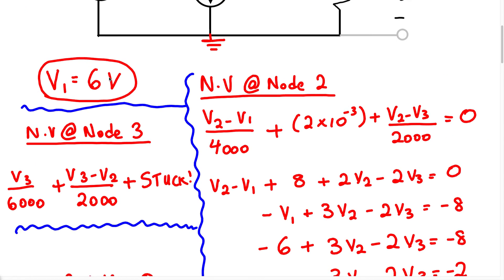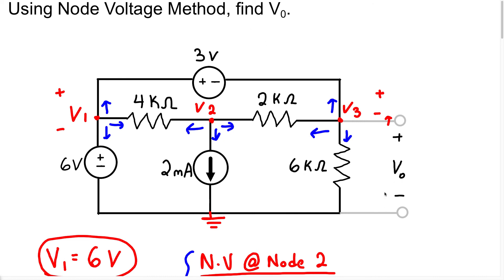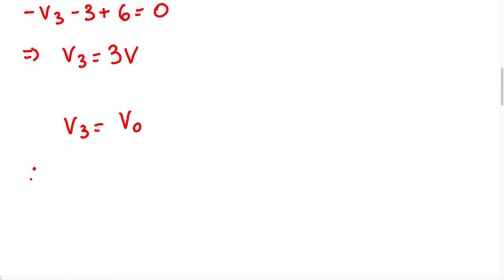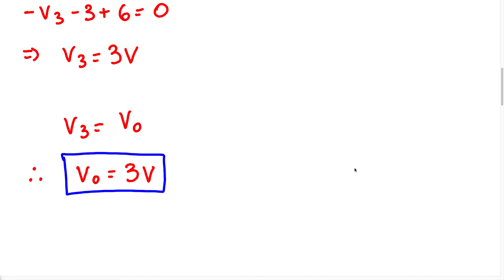Now look at what the question asked us to find — the voltage VO, which is the voltage across the 6k resistor. Once we found the voltage at node 3, we actually found our answer, because the voltage at node 3 is the exact same voltage across the 6k resistor. Therefore, V3 equals VO, and VO equals 3 volts.